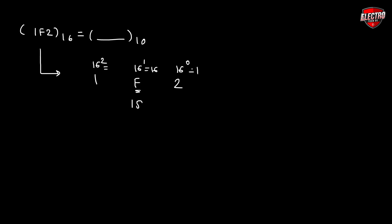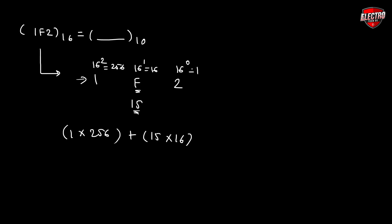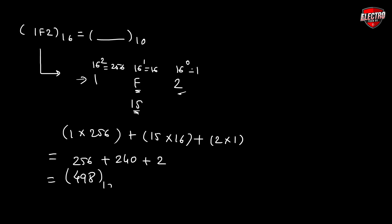16² equals 256. So we compute: 1 × 256 plus F (which is 15) × 16 plus 2 × 1, which equals 498 in the decimal number system. This is how you convert a given hexadecimal number into the decimal number system.